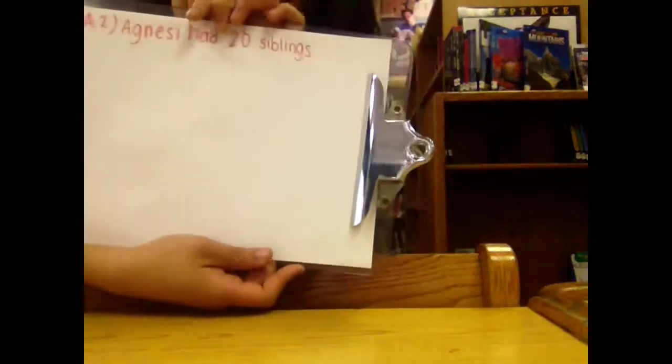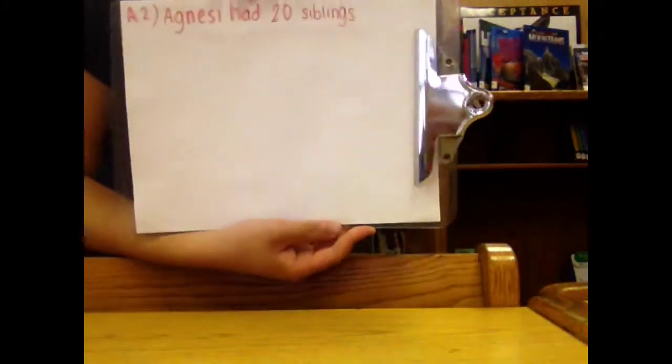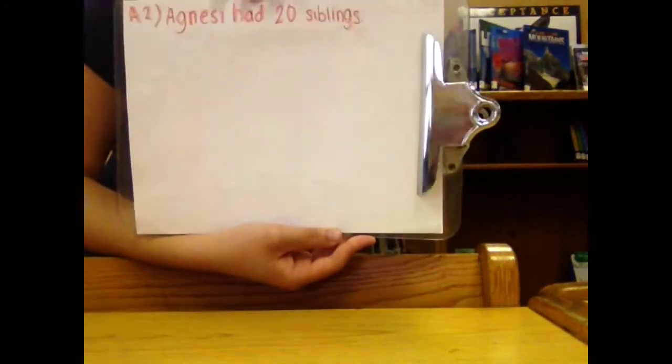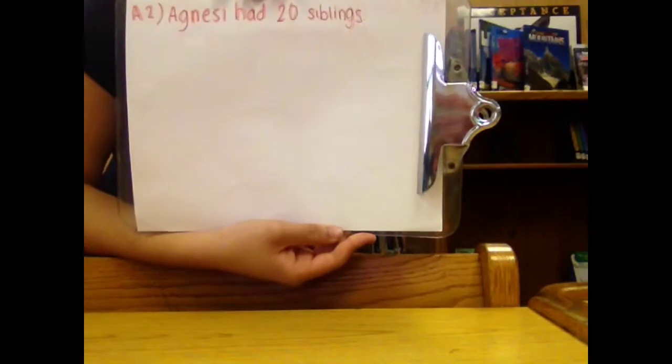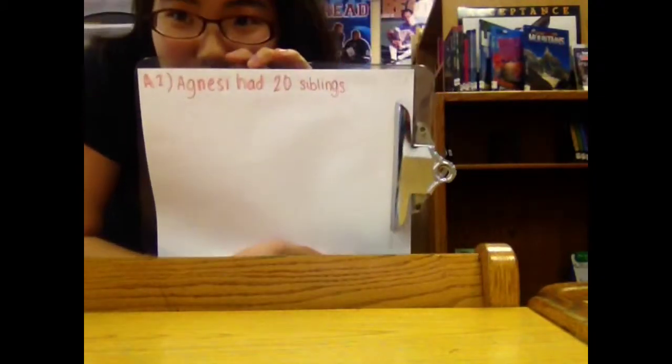The answer is Agnesi had 20 siblings. You might have thought that Agnesi had 21 siblings, but she was one of 21 siblings, so you must remember to subtract one.